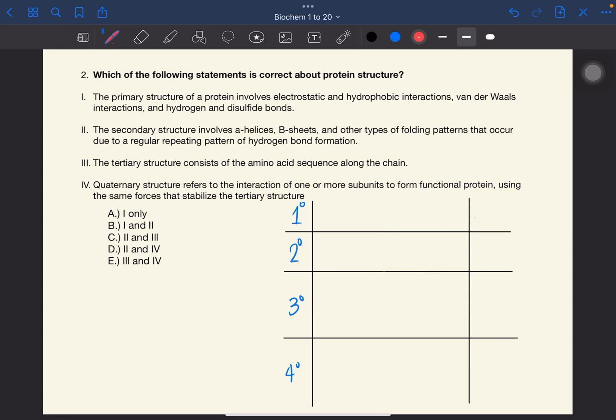Number two, which of the following statements is correct about protein structure? Let's look at the statements one by one. The primary structure of a protein involves electrostatic and hydrophobic interactions, van der Waals interactions, and hydrogen and disulfide bonds. So this is wrong. The electrostatic and hydrophobic interactions, etc., this refers to tertiary structure. The primary structure refers to the amino acid sequence.